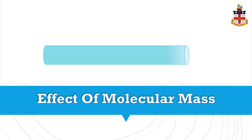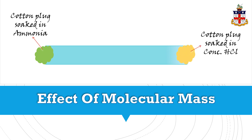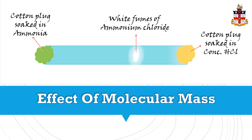One end is sealed with a cotton plug soaked in ammonia solution and the other end is sealed with a cotton plug soaked in concentrated hydrochloric acid. Both gases diffuse along the tube and white fumes of ammonium chloride are formed where they meet. The white fumes appear closer to the end containing hydrochloric acid.